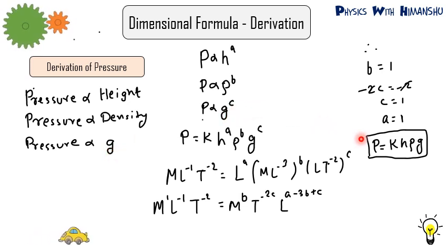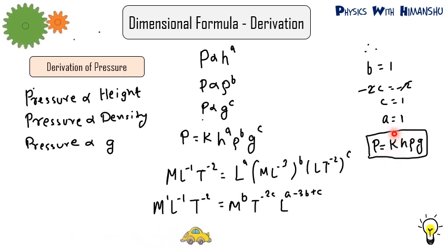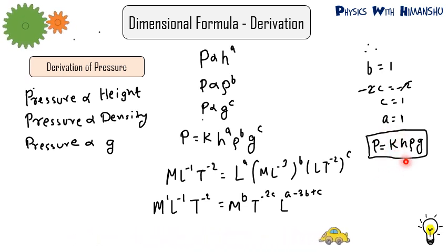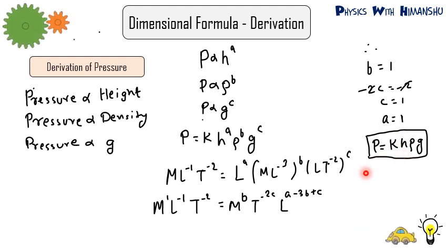The limitation of this method is that we cannot find the value of K using dimensional analysis. K is determined from experimental conditions — you perform an experiment, plug values into the formula, and obtain the value of K.